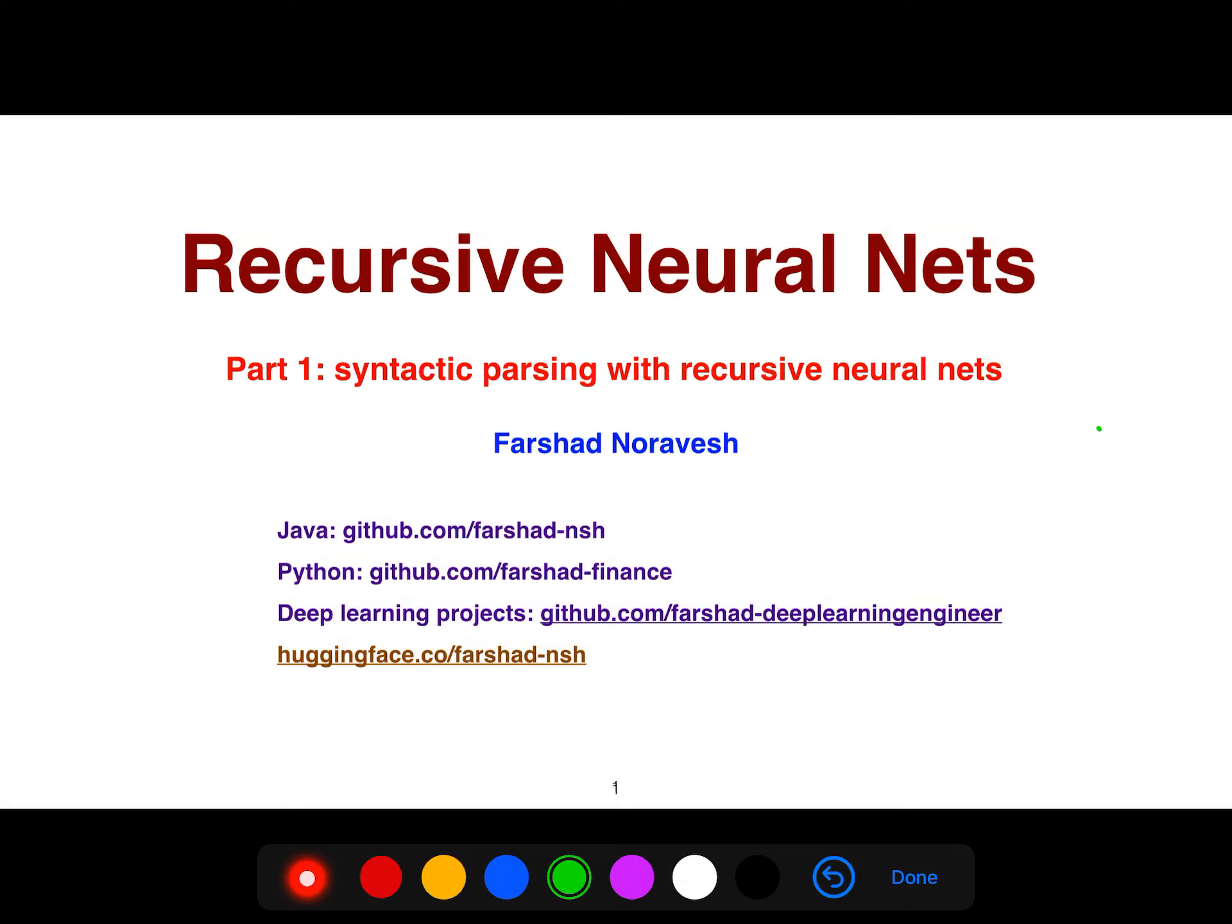Let's talk about recursive neural networks. RNN stands for recursive neural networks and also recurrent neural networks. Recurrent neural networks you are familiar with in machine translation, everything you do with LSTM and GRU. But recursive neural networks, which is the subject of this playlist, people are less familiar with because they are less familiar with the beautiful world of computational linguistics and parsing.